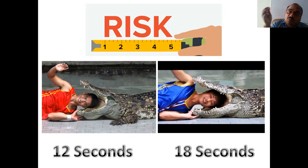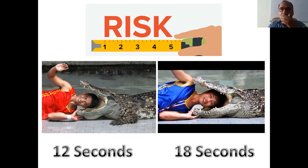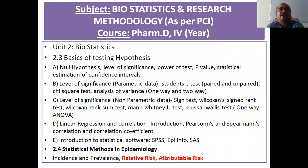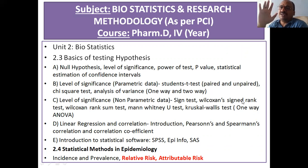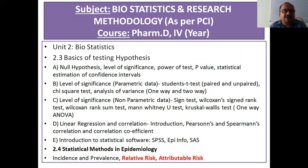Now we are measuring the risk of a disease in a country or state. This is the syllabus for biostatistics and research methodology as per the Pharmacy Council of India, Pharm D fourth year — but it is common for B Pharmacy, M Pharmacy, and all courses. Statistical methods in epidemiology: incidence and prevalence are completed; now we cover relative risk and attributable risk.